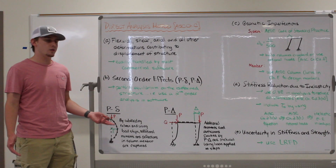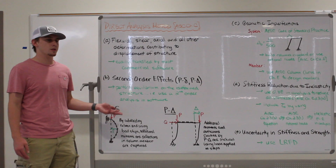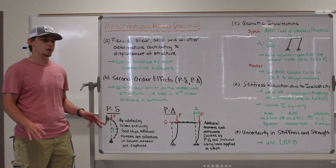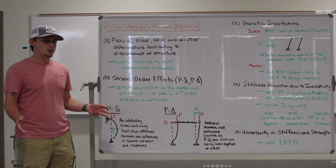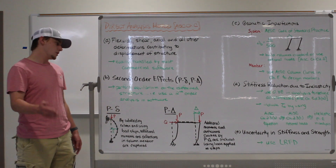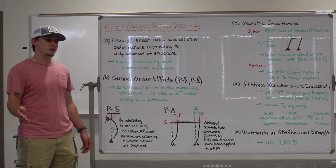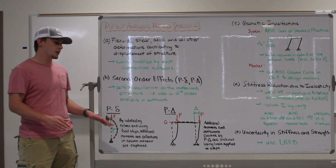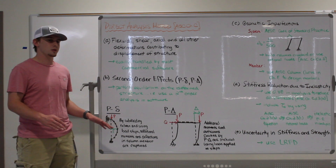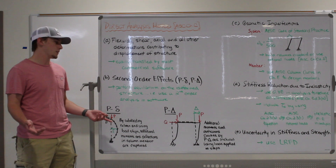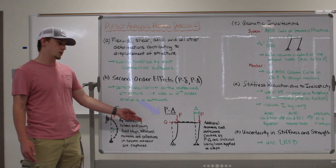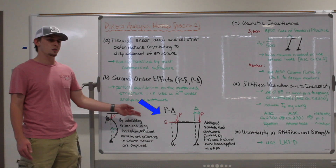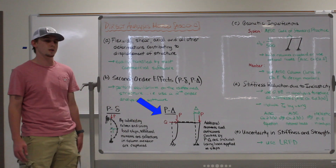It says perform equilibrium on the deformed structure, but I really don't know what that means. So basically it means that instead of applying 100% of the loads at once, we're going to apply in increments — say, 5% — do the analysis, get the bending moments and deflections, and add another 5% to that deformed structure, and repeat until we get to 100%. When the building is deformed, the members are going to pick up additional moments due to the P big delta effect.